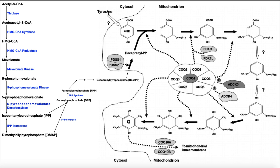Tyrosine is somehow converted into parahydroxybenzoic acid and moved into the mitochondria, though whether the conversion happens in the cytosol or inside the mitochondria is not yet known. Now we have our two precursors: parahydroxybenzoic acid and decaprenyl pyrophosphate. The pathway consists of enzymes belonging to a large multi-enzyme complex, where each subunit is designated CoQ plus a number. The core is CoQ4, with CoQ2, 6, and others surrounding it. The reactions are catalyzed sequentially by CoQ2, 6, 3, two unknown reactions, then 5, 7, and 3 again.